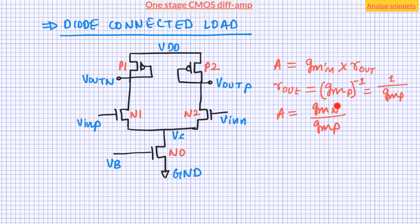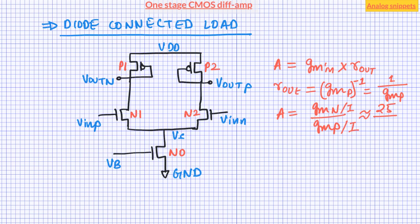To estimate the gain, notice that the input transistor and load transistor carry the same current, and hence their transconductance should be of the same order. Expressing gain in terms of GM over IDS, in a typical design we try to maximize the GM of the input transistor and minimize the GM of the load transistor. For a given current, the maximum GM is offered by the sub-threshold region where GM/ID is roughly 25. We can minimize GM by keeping load transistors in strong inversion, where it can be as low as 5. So we can expect a gain of the order of 5 from this amplifier.